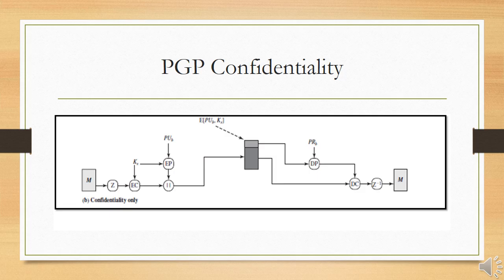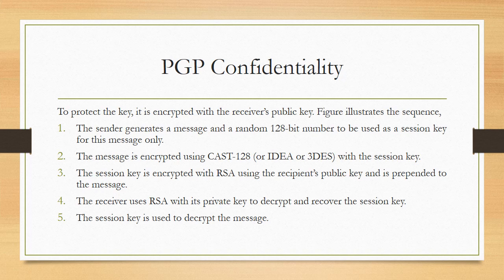The figure illustrates PGP confidentiality. To protect the key, it is encrypted with the receiver's public key. The sequence is as follows: the sender generates a message and a random 128-bit number to be used as a session key for this message only. The message is encrypted using CAST-128, IDEA, or Triple-DES with the session key. The session key is encrypted with RSA using the recipient's public key and prepended to the message. The receiver uses RSA with its private key to decrypt and recover the session key, which is then used to decrypt the message.